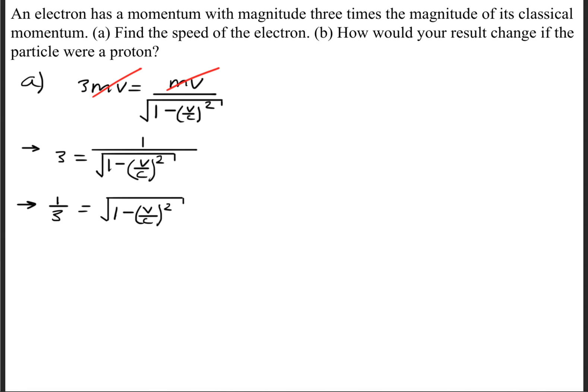What we can do next is take the reciprocal on both sides, or another way of doing that is cross multiply and divide on both sides so that we get 1 over 3 is equal to the square root of 1 minus v over c squared.